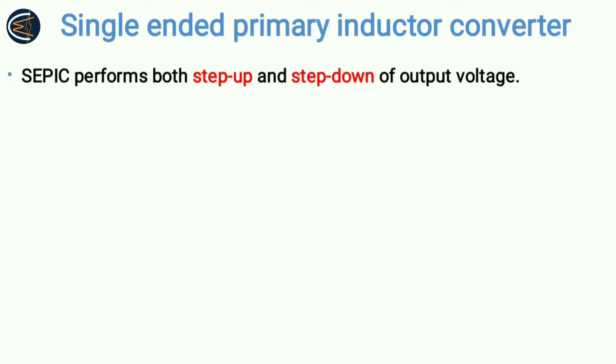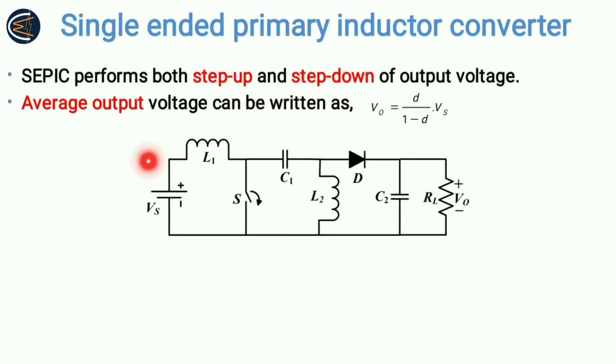Average output voltage is same as buck-boost converter, also same as chook converter. That is VO is equal to D by 1 minus D into VS. This is the circuit diagram of a SEPIC. VS is the input supply voltage, VO is the output voltage.